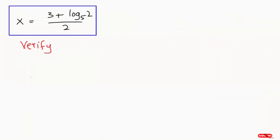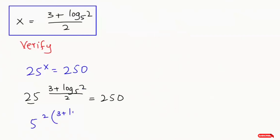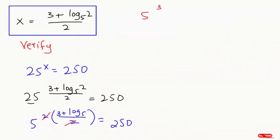Now we're going to verify the answer. The equation we have is 25 to the power of x equals 250. I'm going to plug in the x value: 25 to the power of (3 plus log base 5 of 2) over 2 equals 250. Writing 25 as 5 squared: 5 to the power of 2 times (3 plus log base 5 of 2) over 2 equals 250. The 2s cancel, giving 5 to the power of 3 plus log base 5 of 2 equals 250.